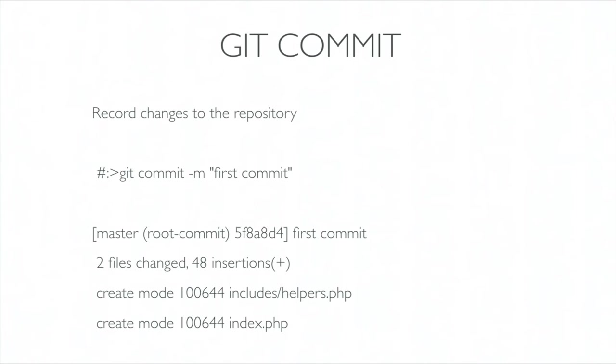In our own workflow we add a local settings file which we change dynamically based on the environment. In our local development environment, we'll turn on all error reporting, whereas in production we make sure that flag is set to false. That way we don't have to manually go into Drupal for every production site and turn error reporting off. The next step is to record the change to version control — we've staged the files, so now we commit with the git commit command.